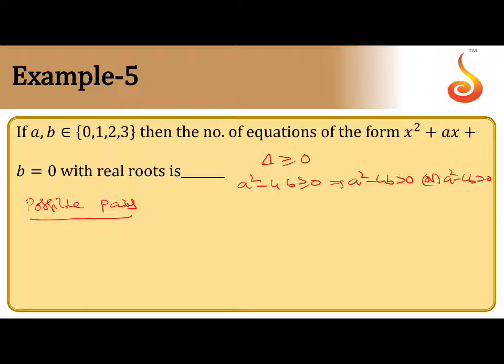So a can be 0. First case. Second case a = 1. Third case a = 2. Fourth case you can give for a, this is 3. So now choice for b.